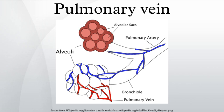The pulmonary veins play an essential role in respiration by receiving blood that has been oxygenated in the alveoli.